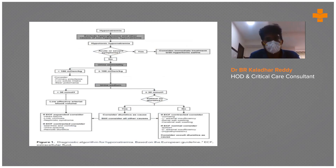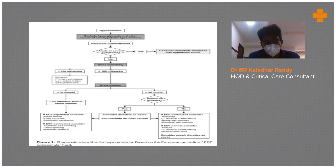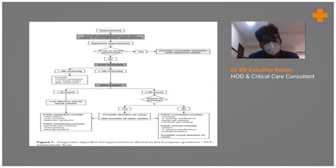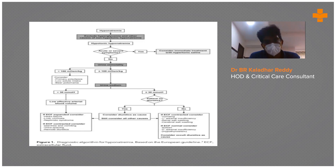This is how you approach hyponatremia. First, you need to exclude hyperglycemia and other causes of hypertonic hyponatremia. Check your protein levels and hyperlipidemia to rule out pseudohyponatremia, check glucose levels, and check if the patient is on mannitol, IVH, or contrast to rule out hypertonic hyponatremia.